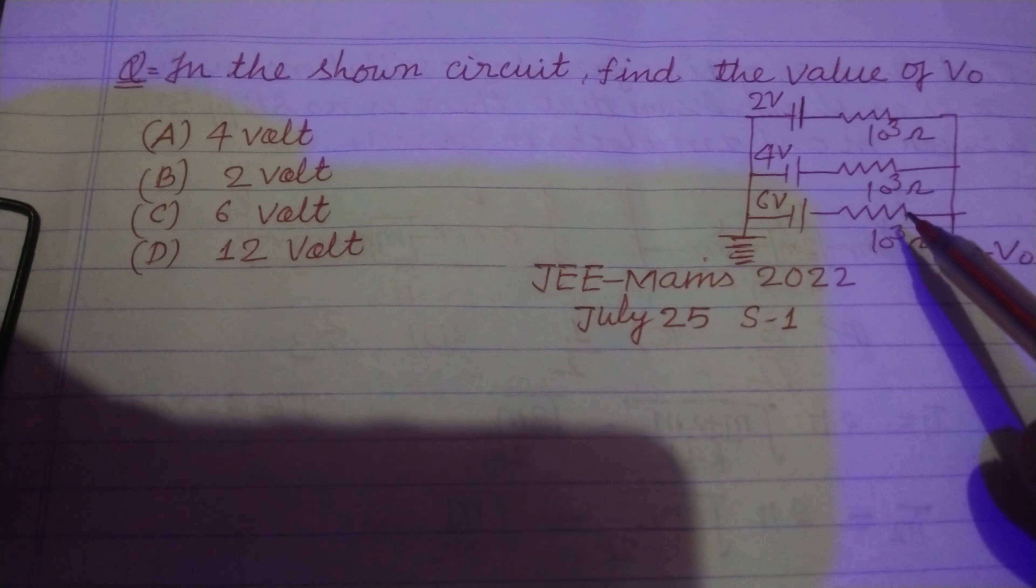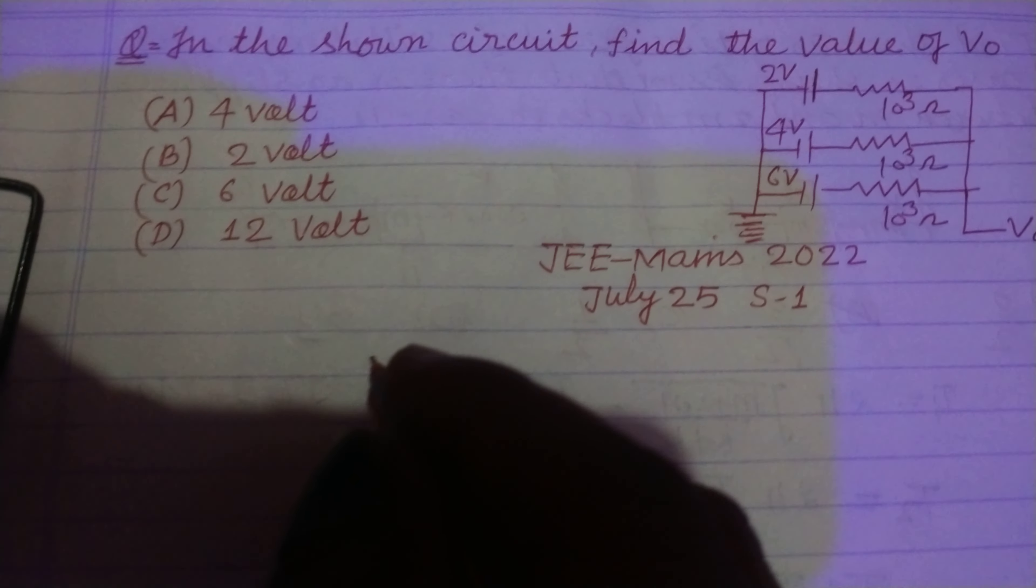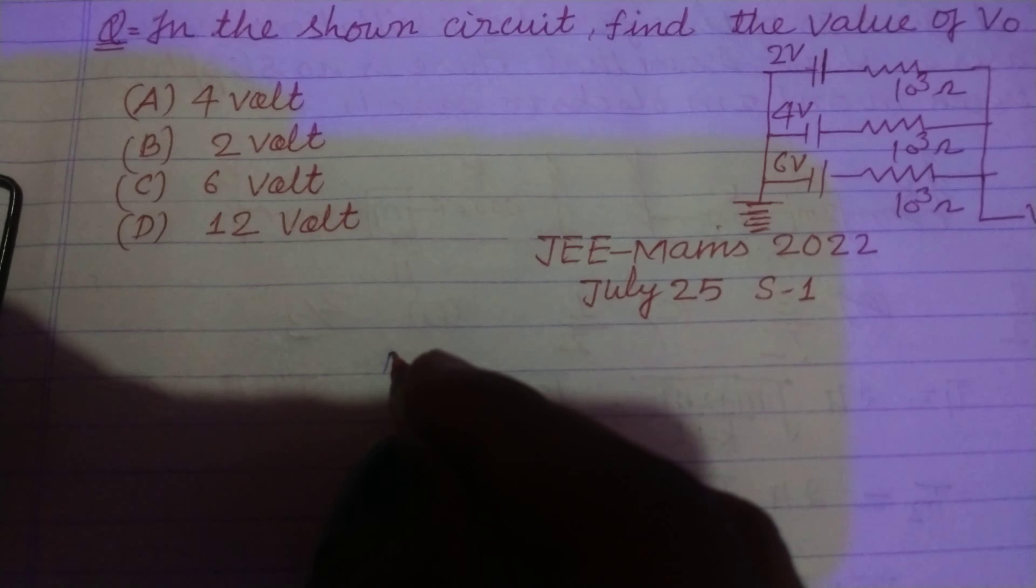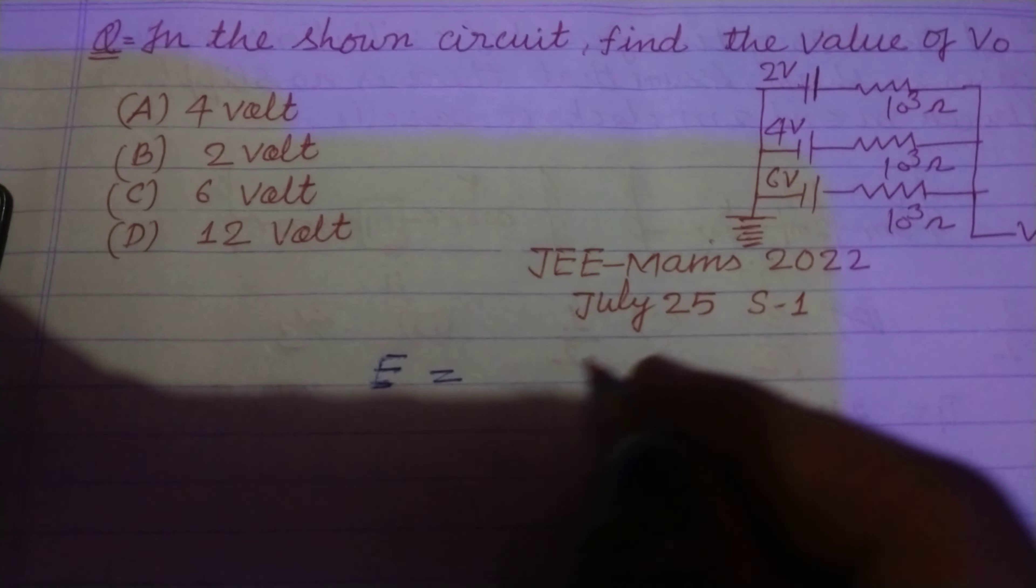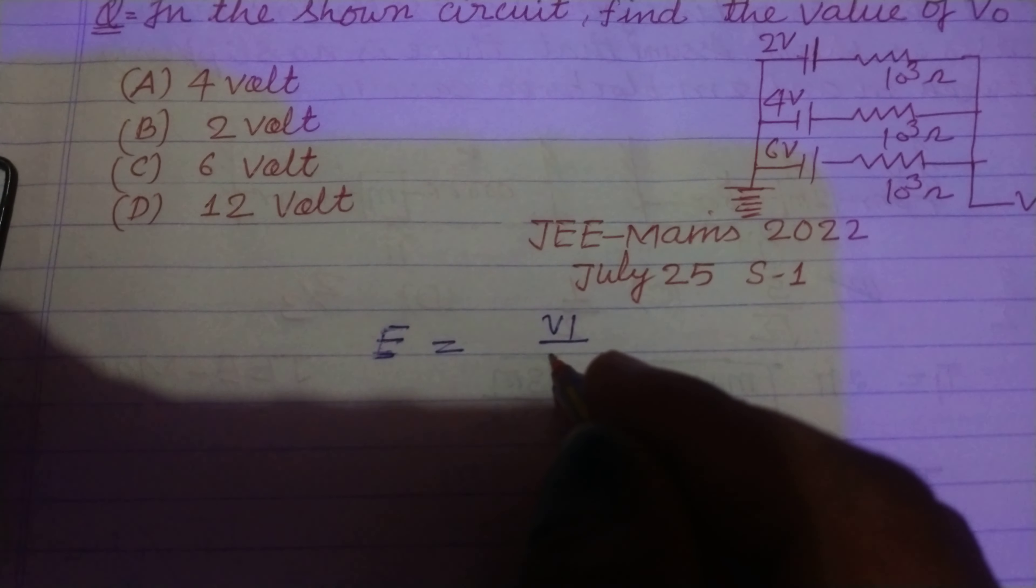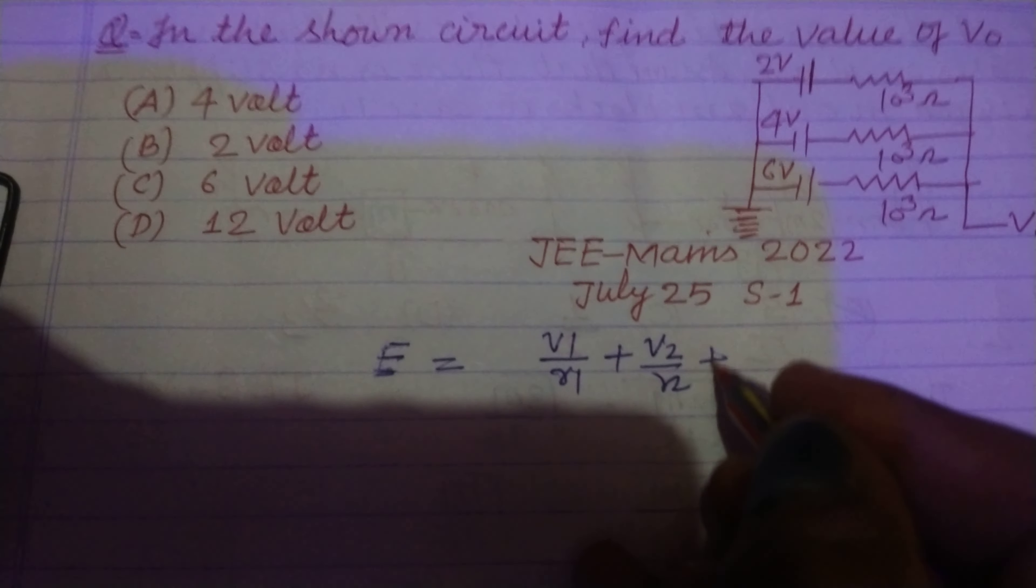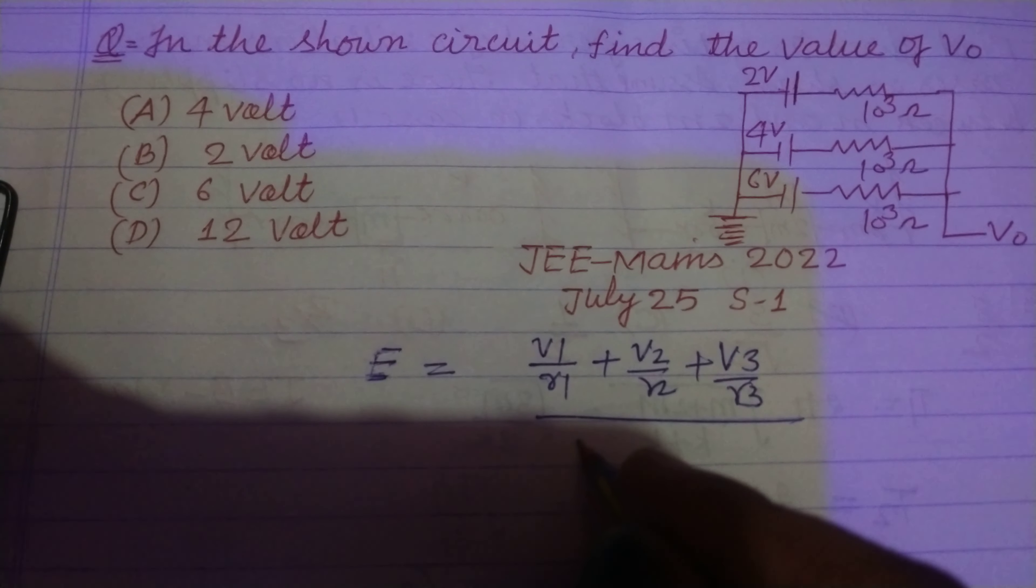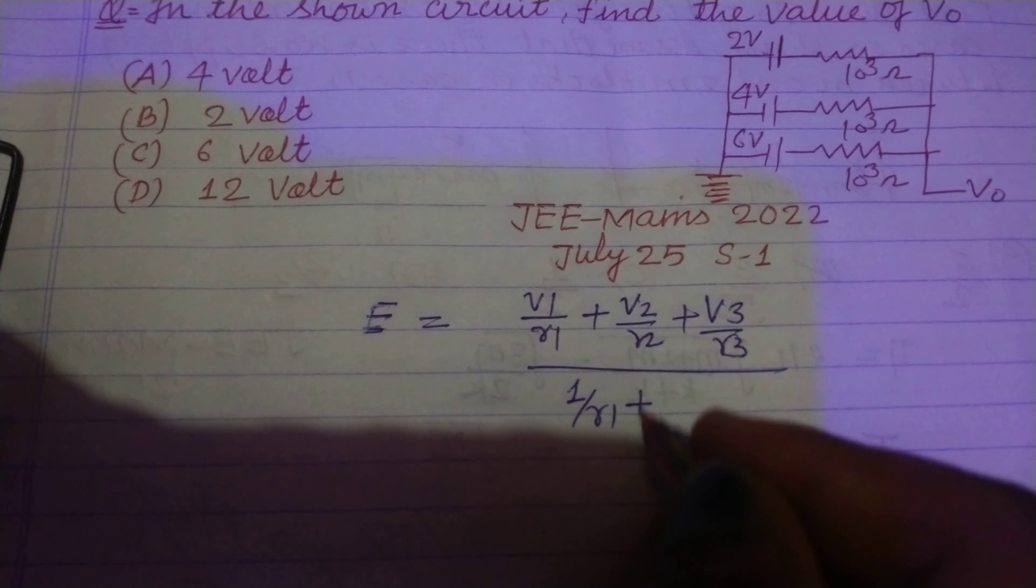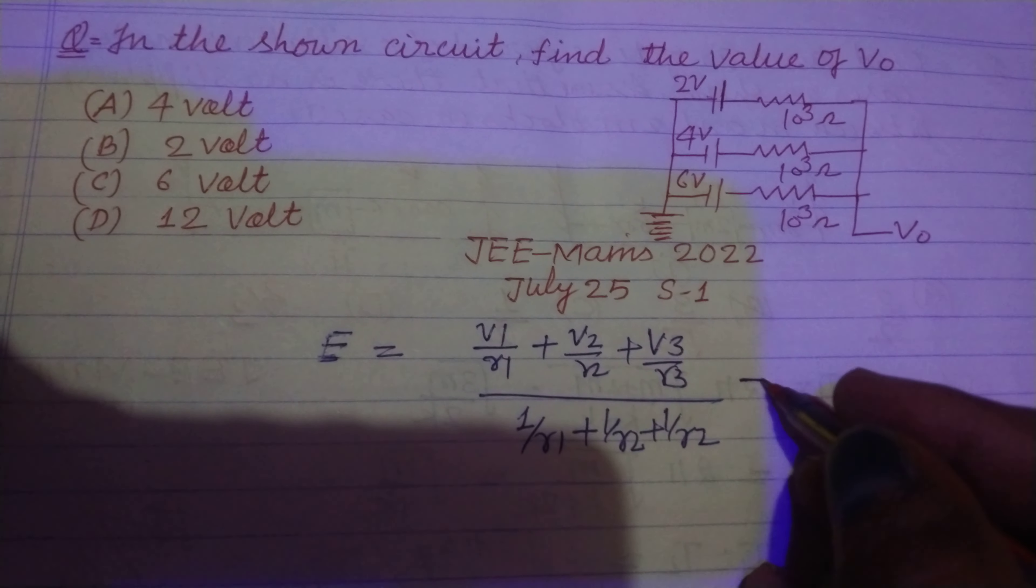Three cells are given, which are connected in parallel combination. So, the equivalent E equals V1 upon R1 plus V2 upon R2 plus V3 upon R3 over 1 upon R1 plus 1 upon R2 plus 1 upon R3.